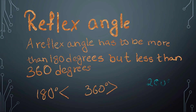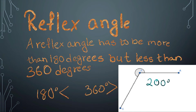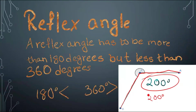Reflex Angle. A reflex angle has to be more than 180 degrees but lesser than 360 degrees. This angle CBA is equal to 200 degrees. 200 degrees is greater than 180 degrees but it is lesser than 360 degrees. This angle makes a bit more than a semicircle but it is not quite a full circle yet.